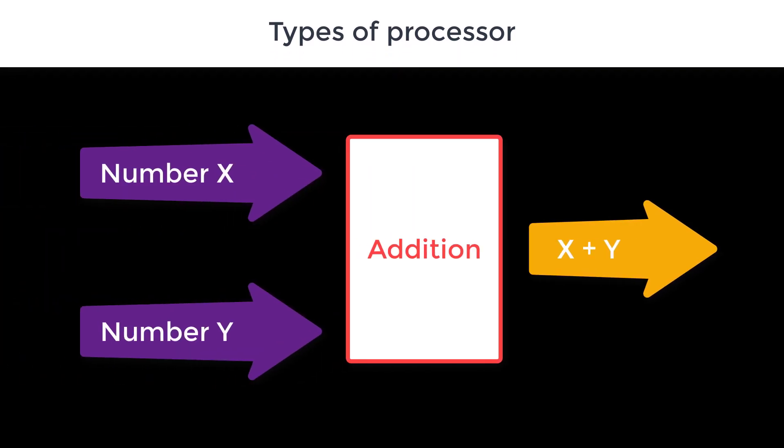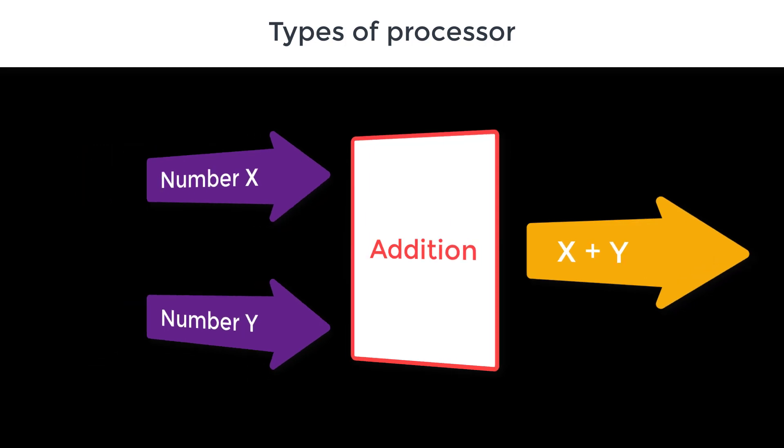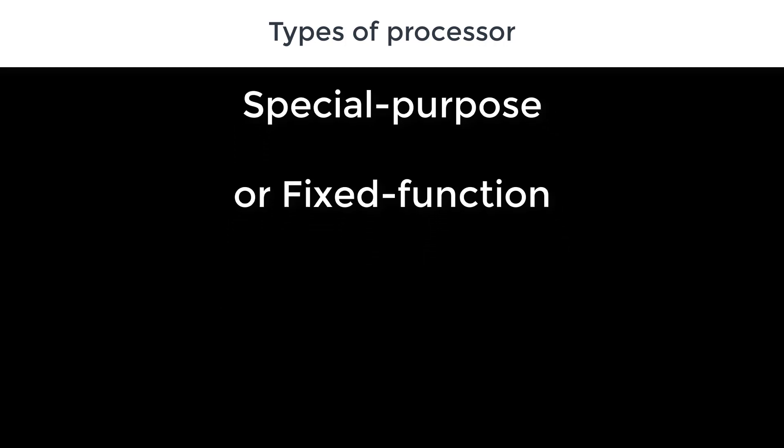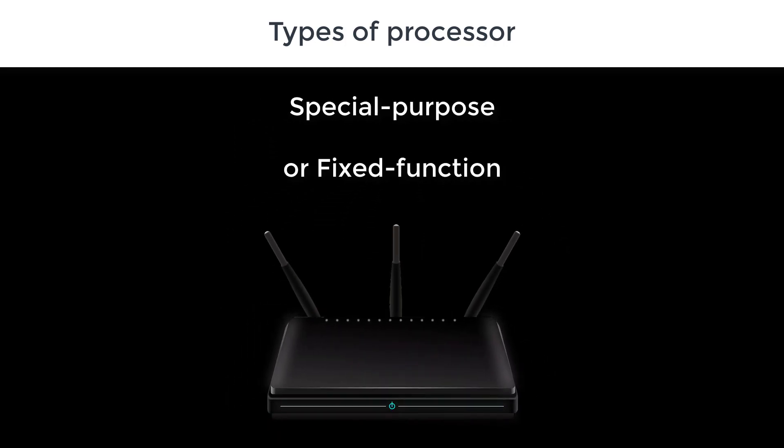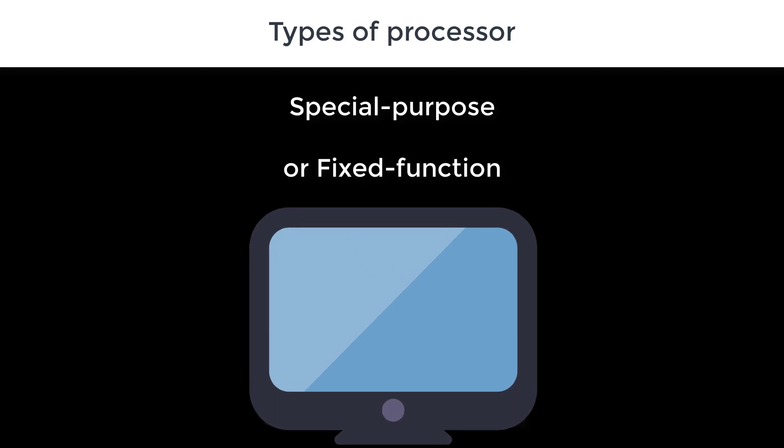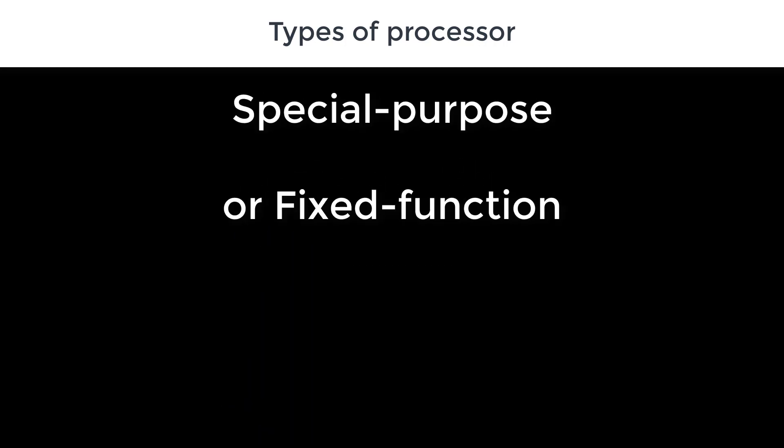Before we look at some standard data representations, we should also think about what kind of processor we want to build. We could build something very simple which just does one thing, say, adds two numbers together. This would be a special purpose or fixed function processor. There are billions of these around the world, such as network communication processors or video display processors. They do one task very efficiently. But that's not really what we want for this series. In this series, we're looking at general purpose processors, processes that can be reprogrammed to perform any task.